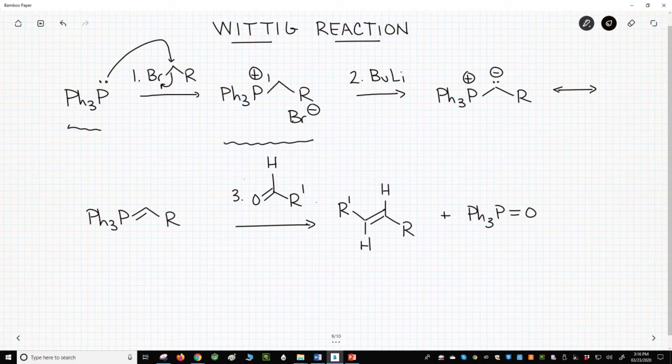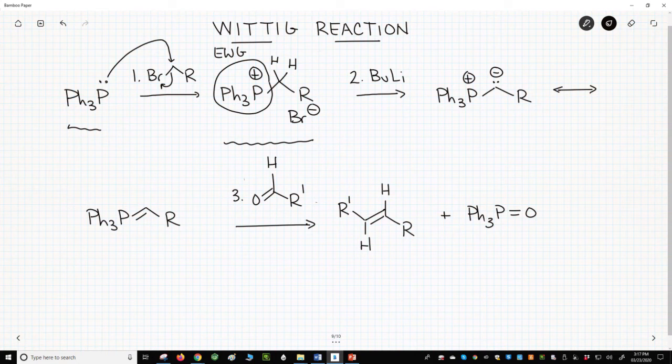The positive phosphorus atom is a strong electron withdrawing group and you can deprotonate the carbon next door with a very strong base. Most often, butyllithium, which is about as strong a base as you can get.